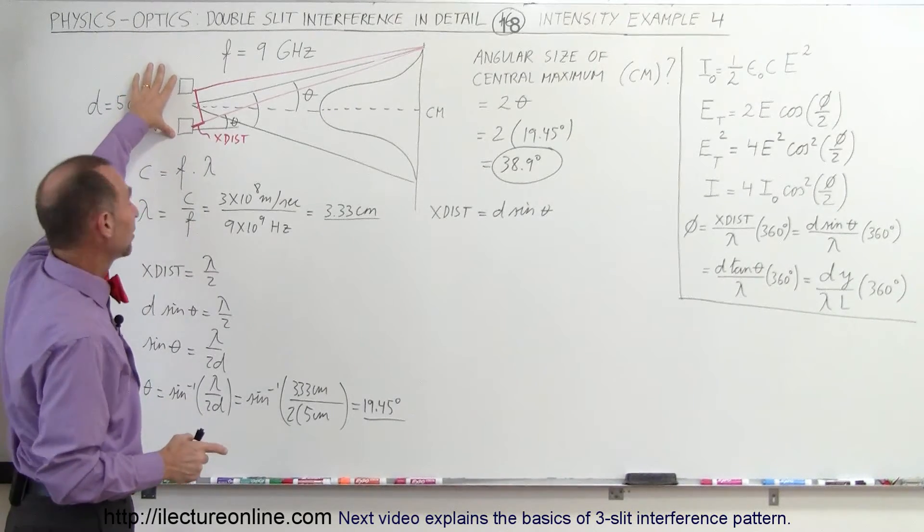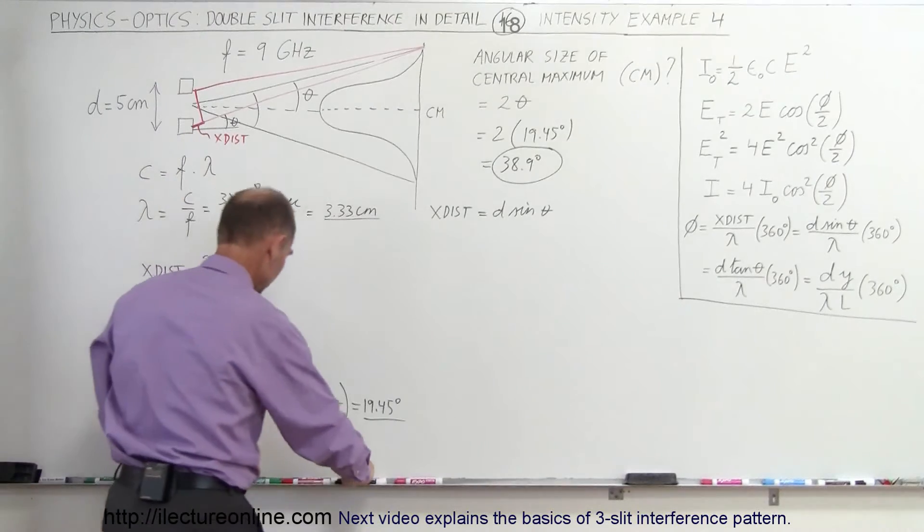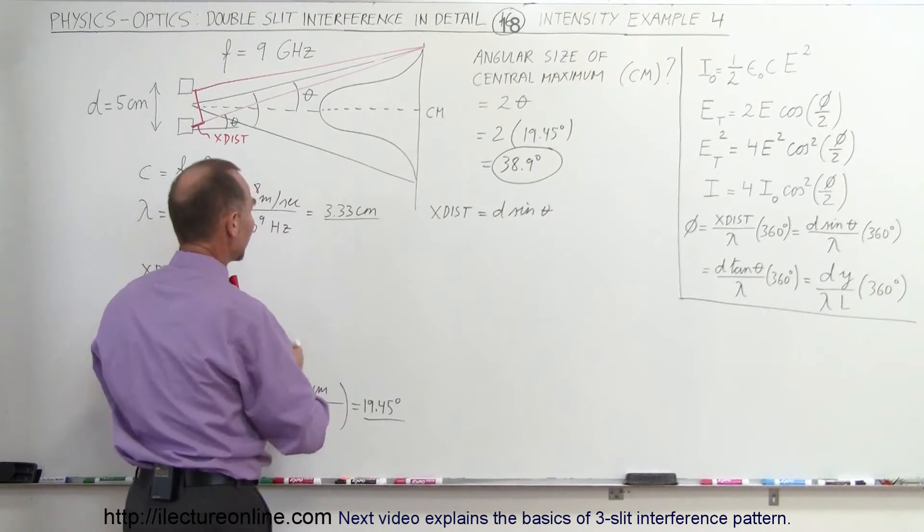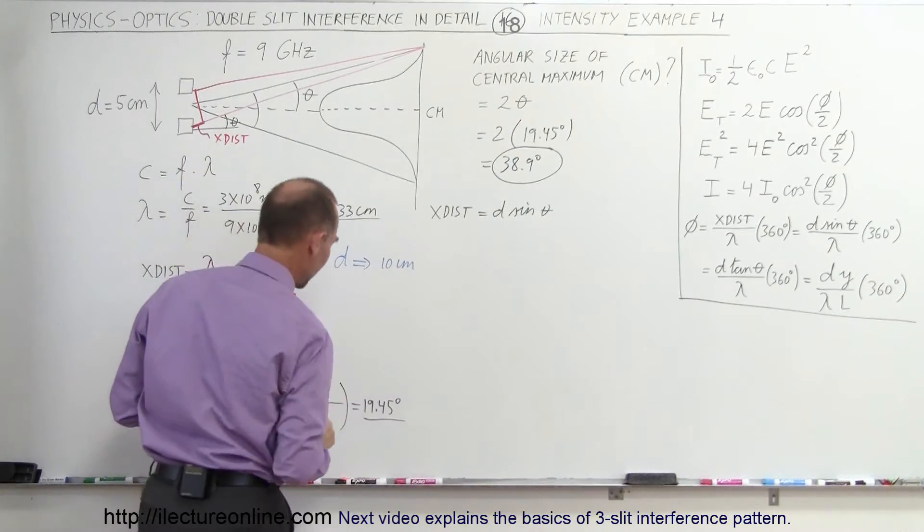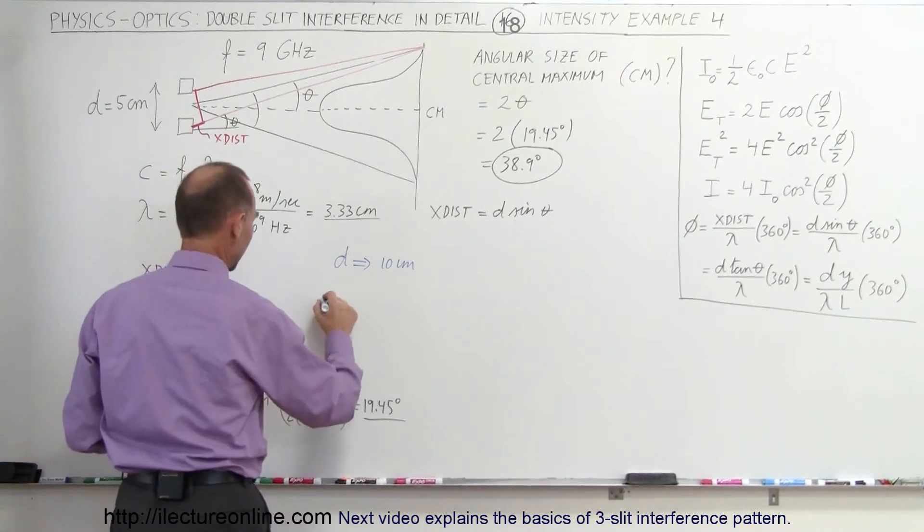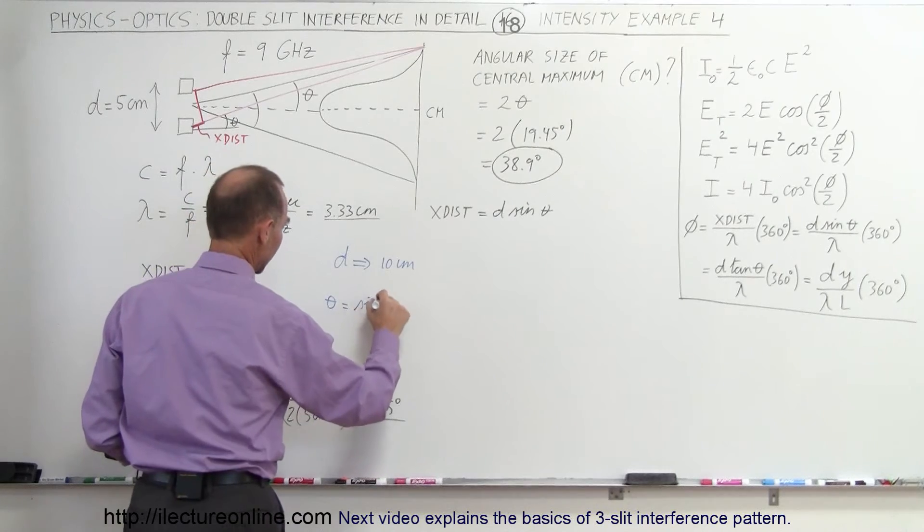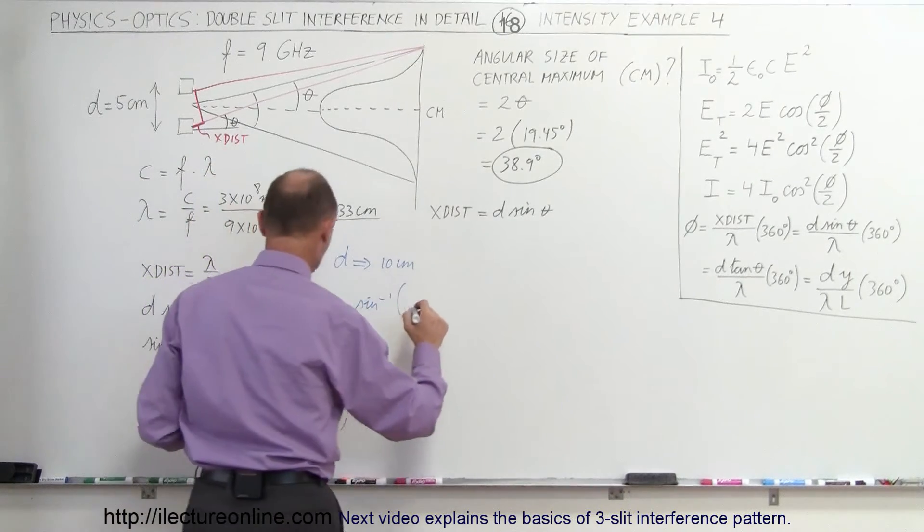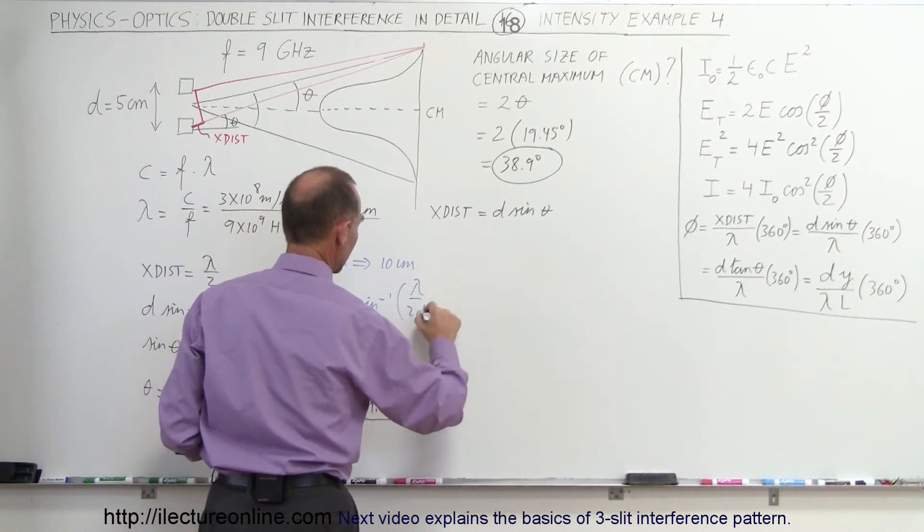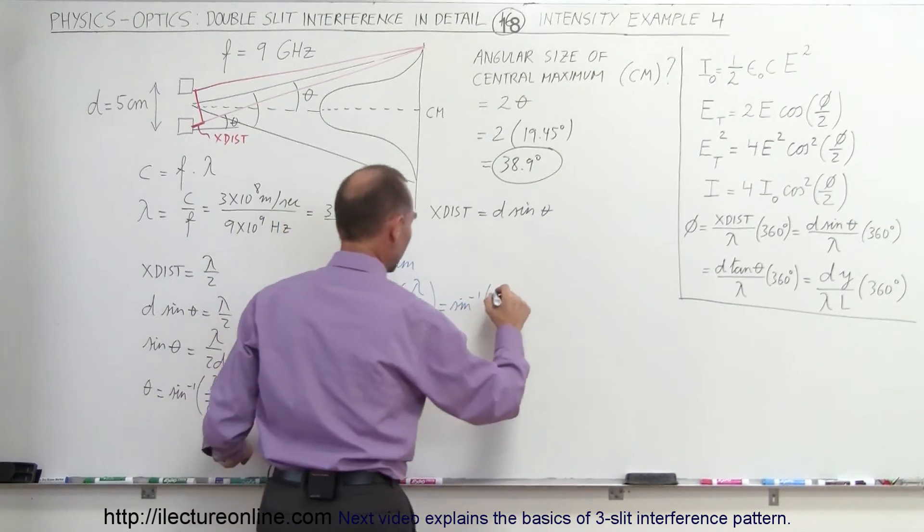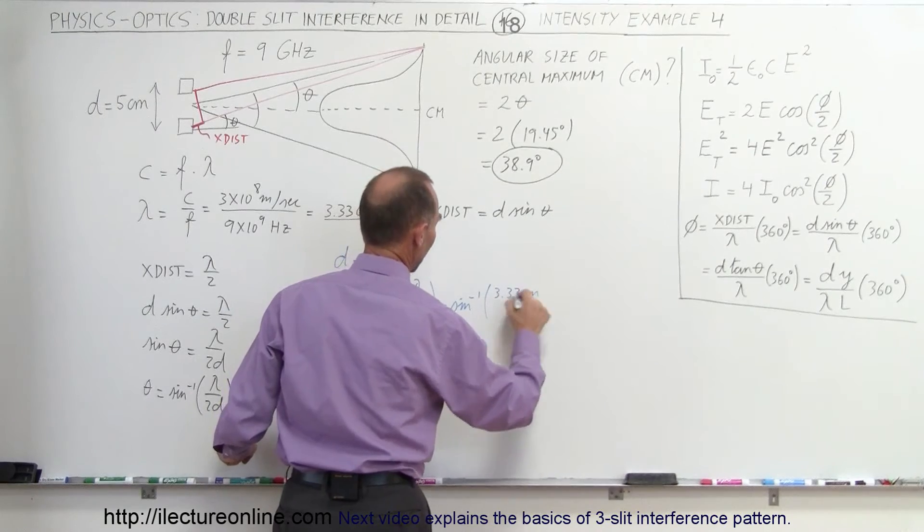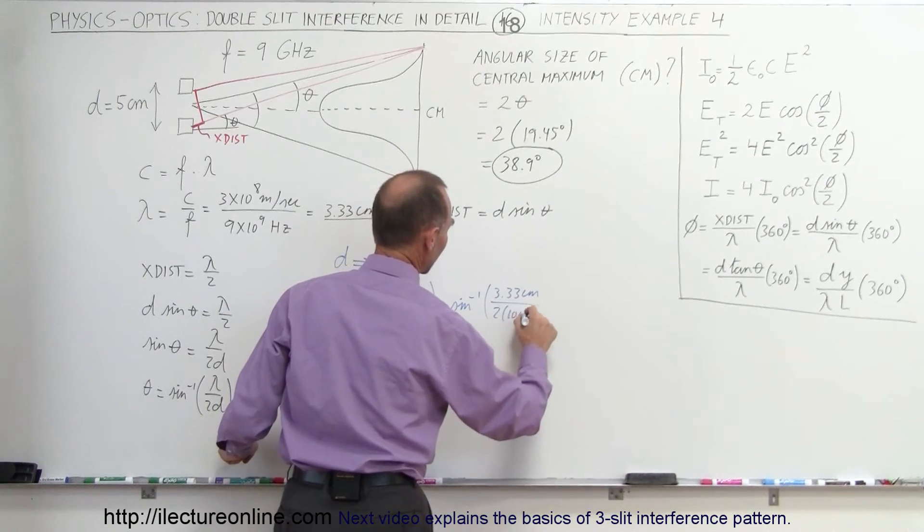So what would happen if we were to double that distance? We're going to take D now, it's going to become 10 centimeters instead of 5 centimeters. Therefore theta is going to be the arc sine of lambda divided by 2D, which equals the arc sine of 3.33 centimeters for lambda divided by 2 times 10 centimeters.